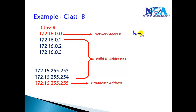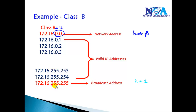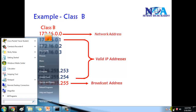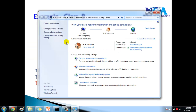A simple way to remember: if the host bits are all zeros, that is the network ID. For example, in a Class B address there are two host portions — if those are both zero it's the network ID. If the host portion has all ones, that is the broadcast address. In binary, all ones in two host octets equals 255.255 in decimal — so 255 in the host portion means broadcast ID.